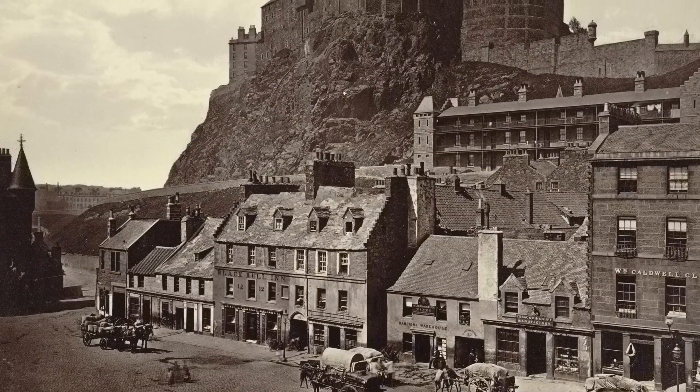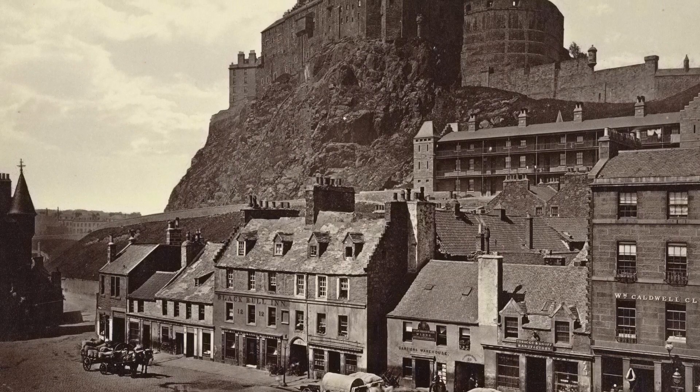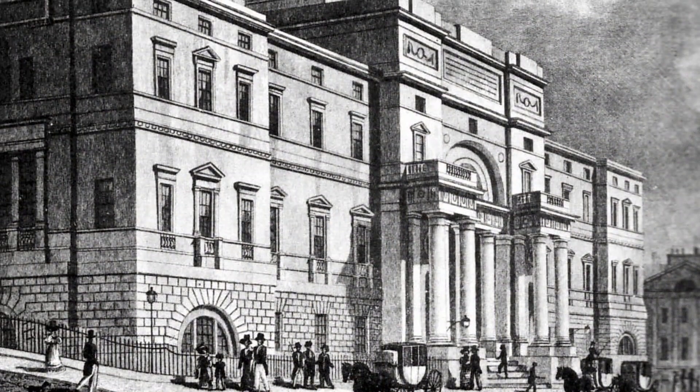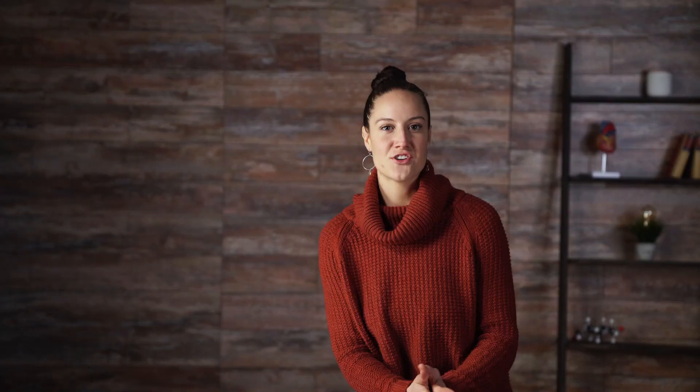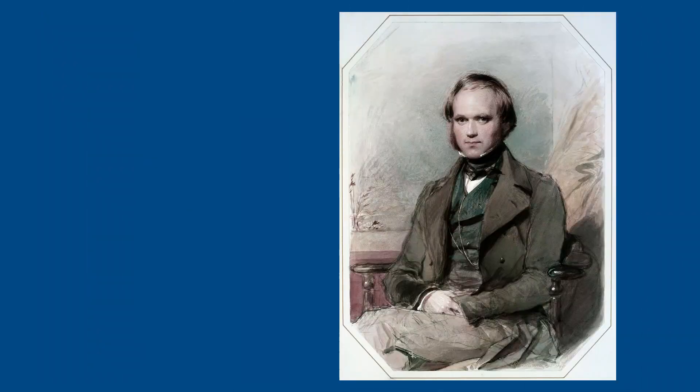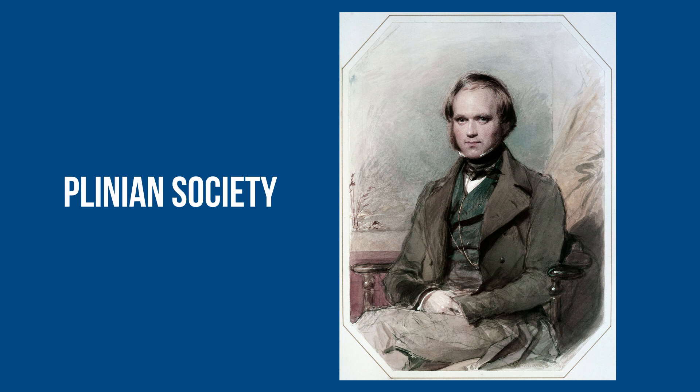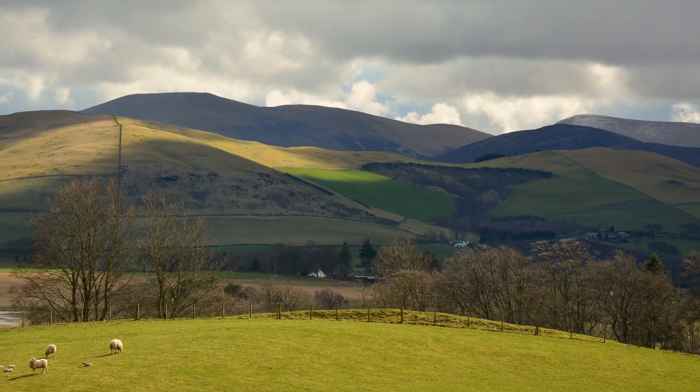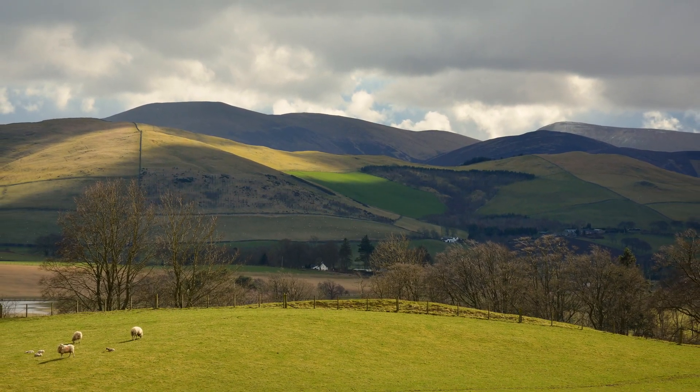In 1825, at the age of 16, his father sent him to Edinburgh University to study medicine. Darwin found Edinburgh to be an outlet for him to exercise his scientific interests. He joined a club called the Plinian Society, which consisted of like-minded students fascinated by scientific philosophy and practice. Their meetings consisted of reading research, discussing findings, and small countryside walks to observe natural phenomena.